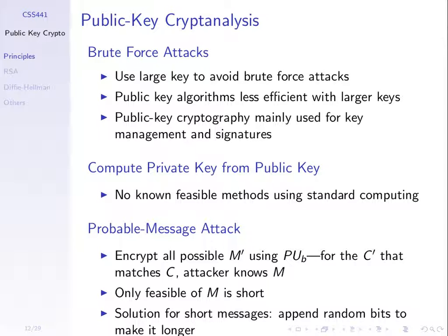To stop a brute force attack, use a large key. Another attack is trying to determine the private key from the public key. For RSA, that involves solving problems like factoring numbers into primes, calculating the totient, or calculating discrete logarithms — and all of those, if the numbers are large enough, take too much time to solve. There's also a probable message attack: try all possible values of the message, and once you find one that produces the known ciphertext, you've found the key.